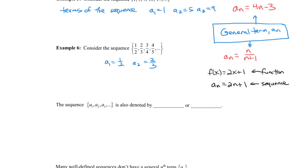A sequence can be denoted a couple of ways. You can put the general term in braces — {a_sub_n} — or write a_sub_n from n=1 to infinity, though you don't really need to do that. Typically you see it as the general term enclosed in braces. When you see this notation, you're talking about a sequence.